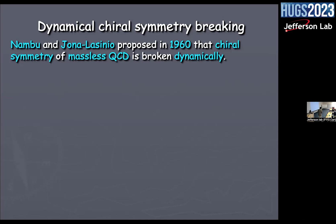Nambu and Jona-Lasinio wrote this paper in 1960, even before Gell-Mann's work on quarks. Nambu asks in the abstract: where did this proton mass come from? He believed there should be a fundamental spin-half field which would break chiral symmetry and give mass to the proton. There was no such field known at that time. But he gave this model without even knowing it, talking about the field which Gell-Mann had not yet proposed and which was not seen in experiment. It was an absolutely lovely paper — one of the greatest papers.